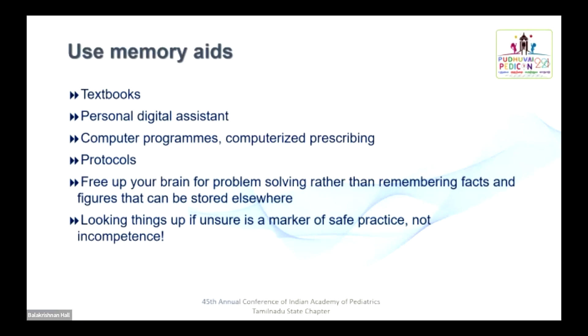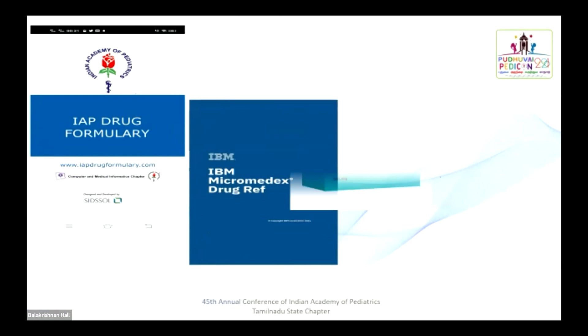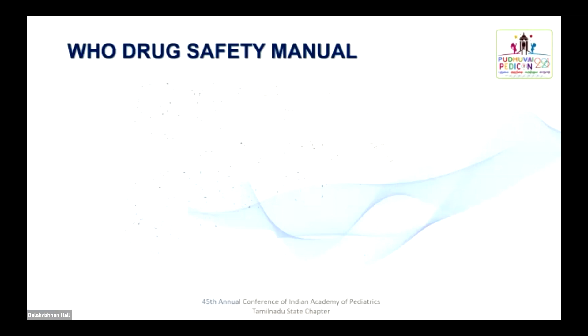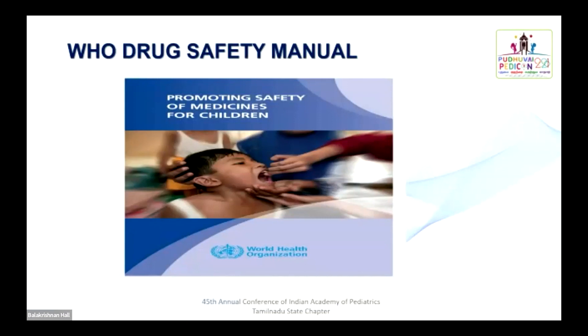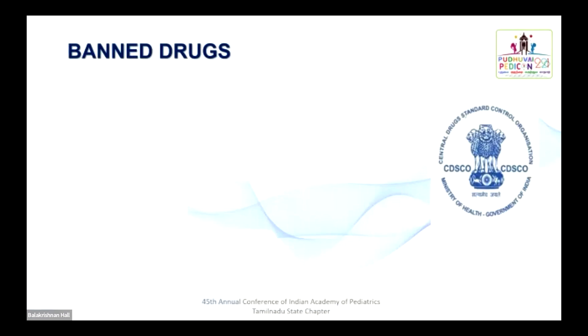Standard tools available for rational prescription include the IAP drug formulary available as an app, which is free for all IAP members. The IBM app is also available, BNF books, and the textbook of Nelson. Every pediatrician must read the WHO Drug Safety Manual before starting their prescription. We must also know about certain banned drugs by CDSCO — the Central Drug Standard Control Organization — which is the governing body of drugs in our country.